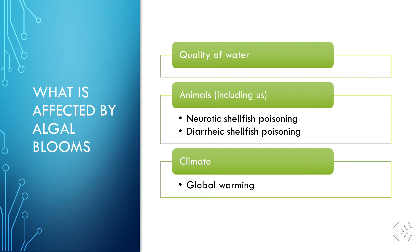Animals, including us, are affected. We are at risk for developing sicknesses and illnesses such as neurotoxic shellfish poisoning and diarrhetic shellfish poisoning. If not treated properly and in a timely manner, these can kill us. They definitely affect individuals living in third world countries like the Philippines and Indonesia, which I'll get into in a different slide.